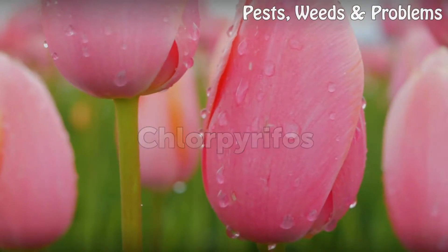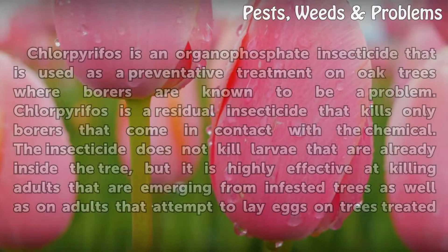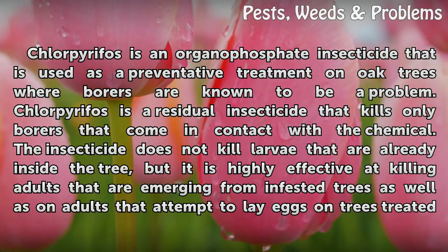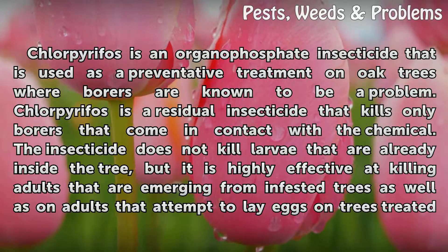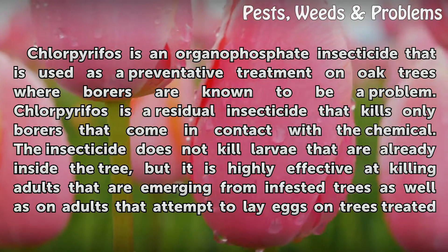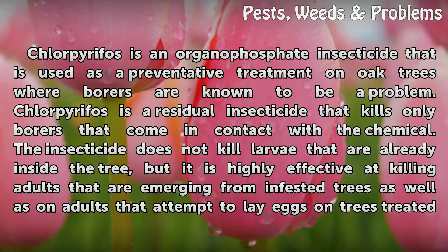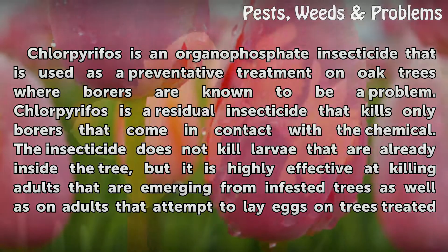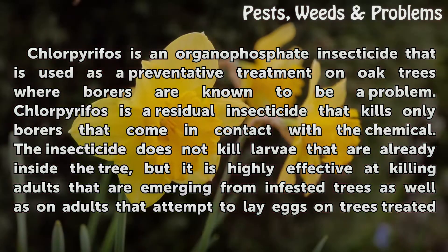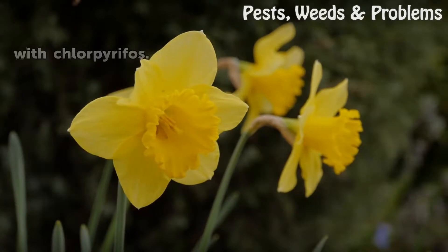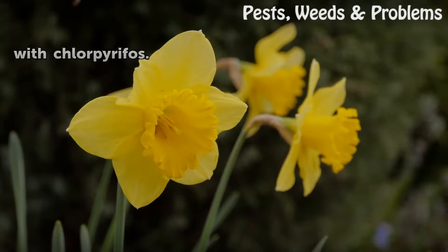Chloropyrifos. Chloropyrifos is an organophosphate insecticide that is used as a preventative treatment on oak trees where borers are known to be a problem. Chloropyrifos is a residual insecticide that kills only borers that come in contact with the chemical. The insecticide does not kill larvae that are already inside the tree, but it is highly effective at killing adults that are emerging from infested trees as well as adults that attempt to lay eggs on trees treated with chloropyrifos.